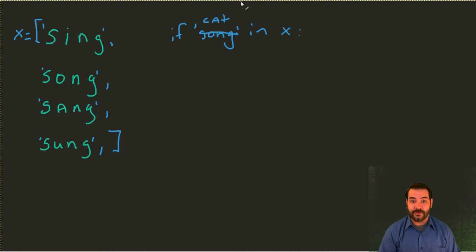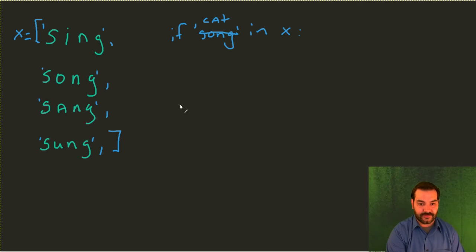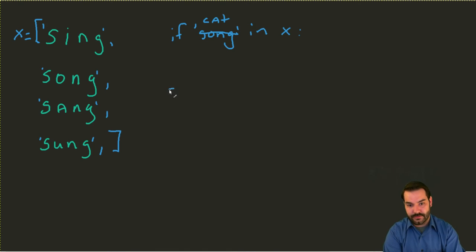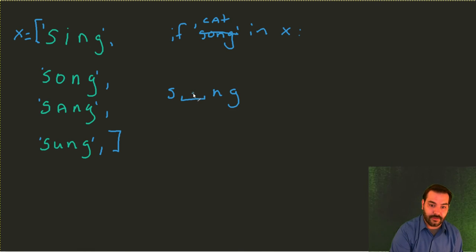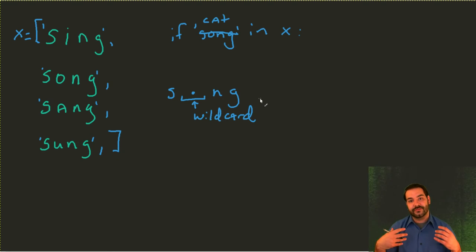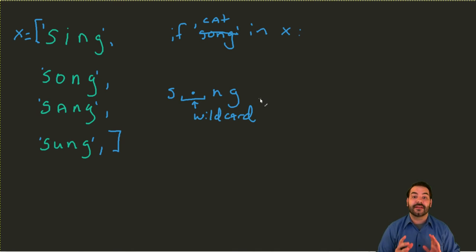How can we be a little cleaner with this? Inside of regular expressions, we can start to separate out what we're looking at — in our case, the structure of the word. We have an S, an N, and a G, but this middle part is sort of a blank space; it can change. One of the things we can do is introduce something like the wildcard. The wildcard — this dot that we're seeing — allows us to say that anything can appear right there. It's going to match the structure we're looking for.